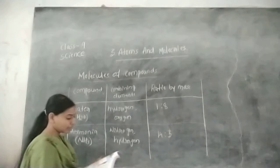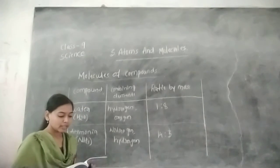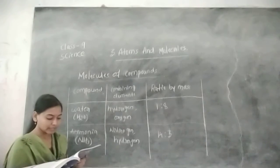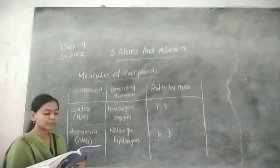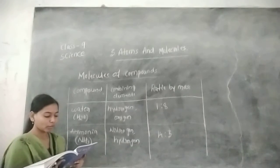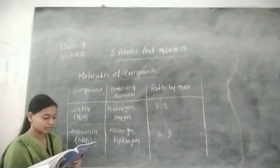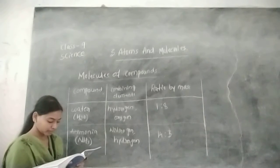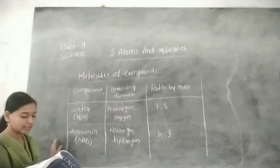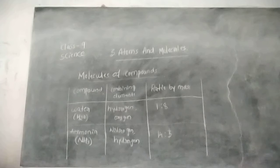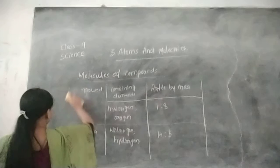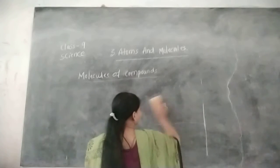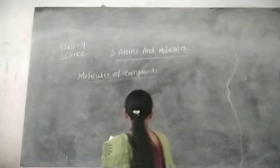Another example is carbon dioxide. The combining elements are carbon and oxygen, and there is a ratio by mass. Referring to table 3.4 — ratio by mass of atoms present in the molecules — and table 3.2 — atomic masses of the elements — we can find the ratio by number. You should draw that table.